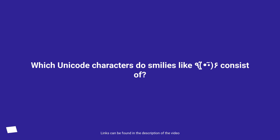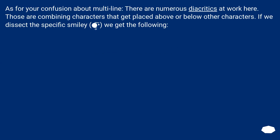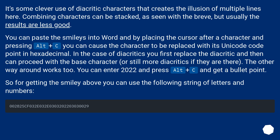Which unicode characters do smileys consist of? As for your confusion about multiline, there are numerous diacritics at work here. Those are combining characters that get placed above or below other characters. If we dissect the specific smiley, it's some clever use of diacritic characters that creates the illusion of multiple lines here.